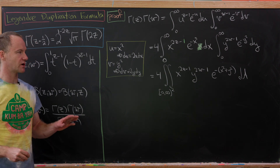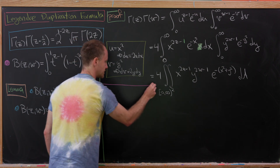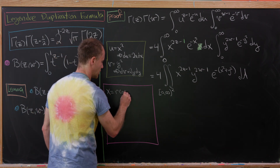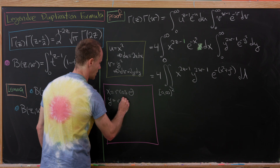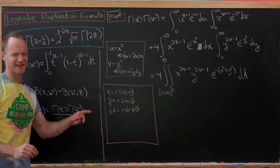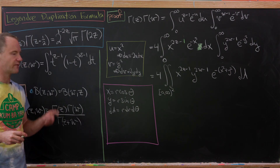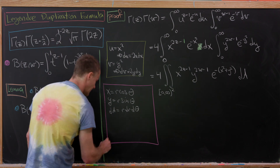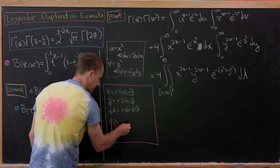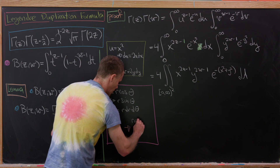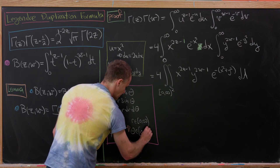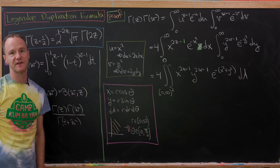The appearance of x² + y² motivates us to make a polar change of variables. So we set x = r cosθ, y = r sinθ, and dA = r dr dθ. Our region of integration, the first quadrant, in polar coordinates becomes r ∈ [0, ∞) and θ ∈ [0, π/2].